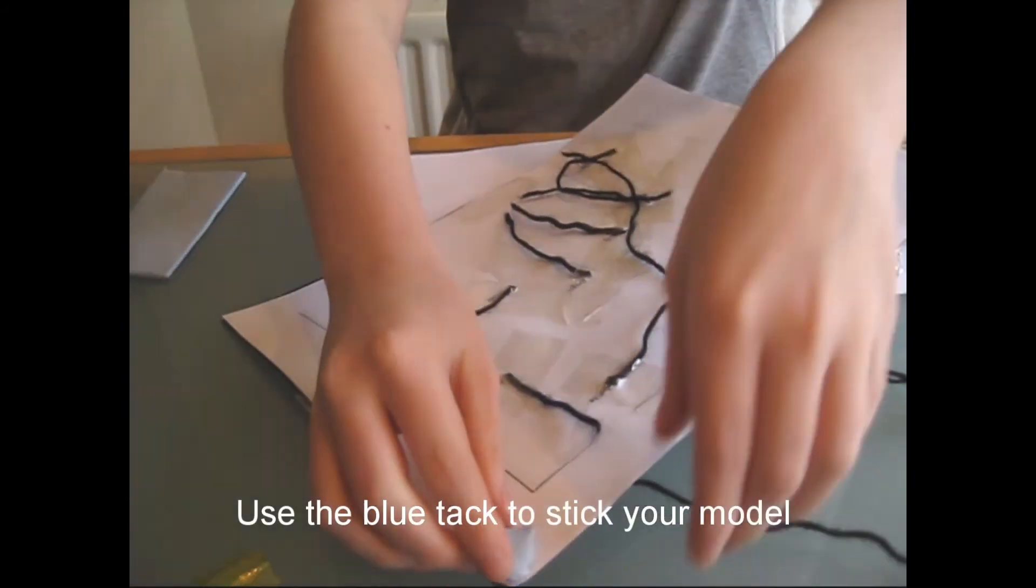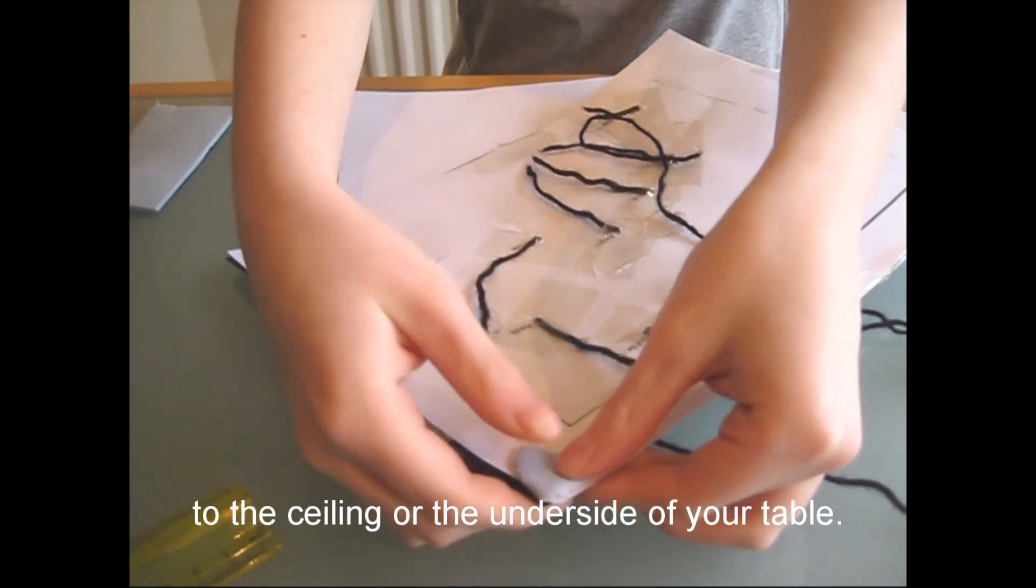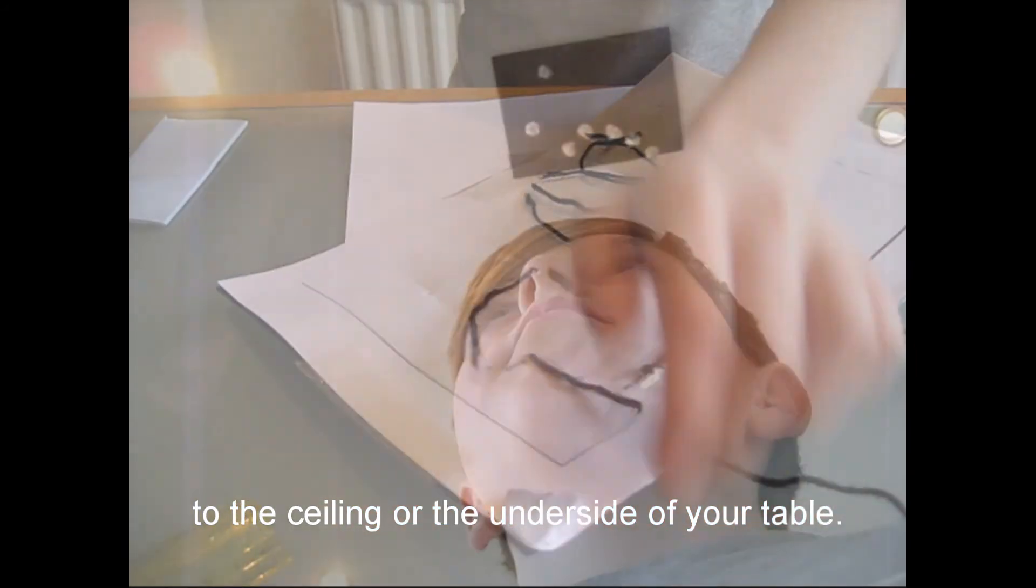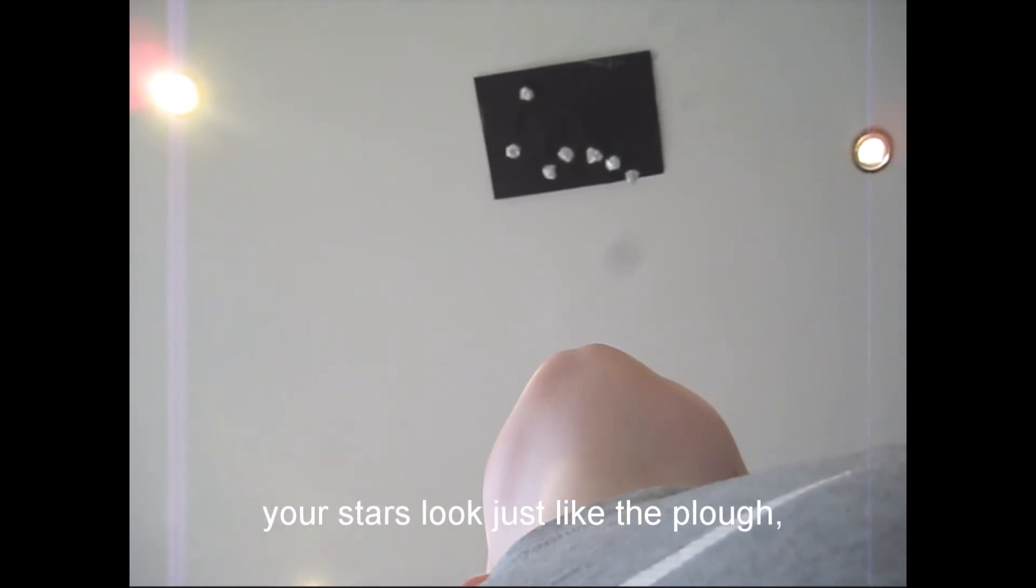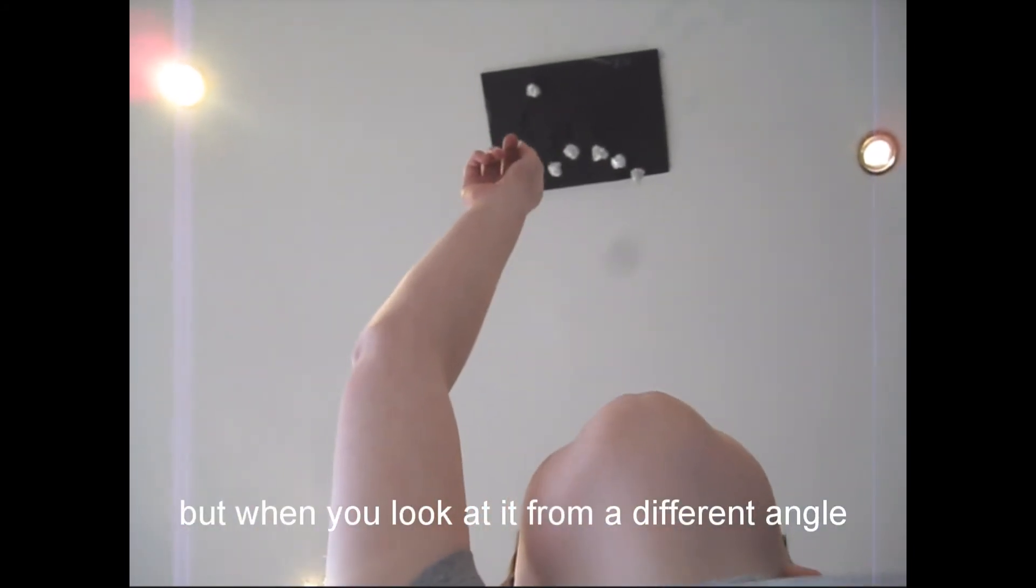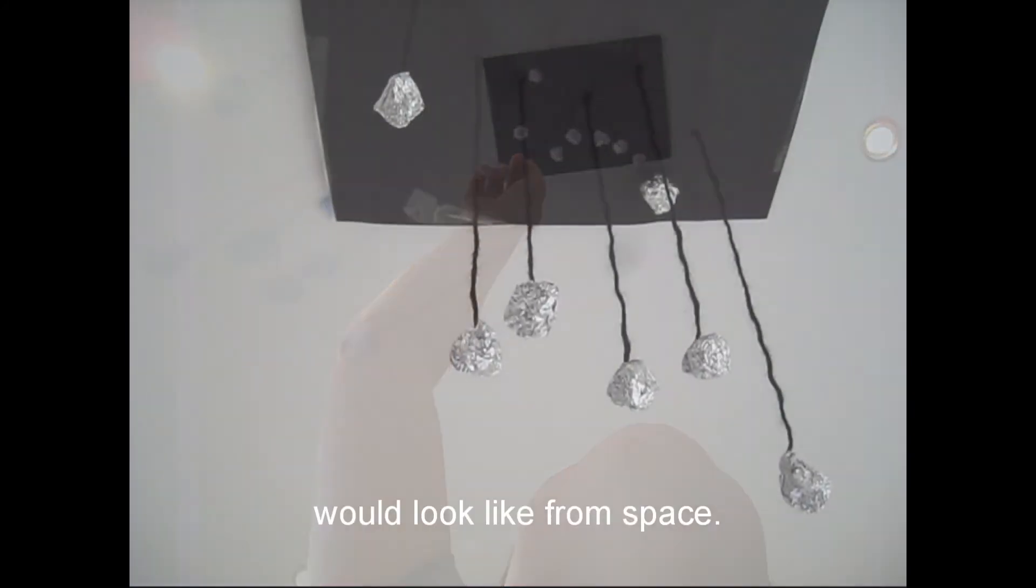Use the blue tack to stick your model to the ceiling or the underside of your table. When you look up at it, you will see that your stars look just like the Plough. But when you look at it from a different angle, you'll see what the stars in the Plough would look like from space.